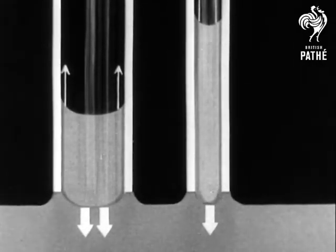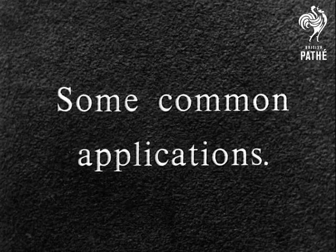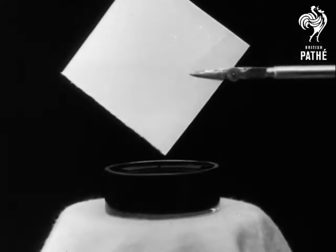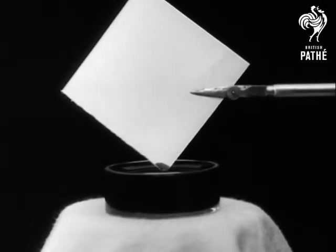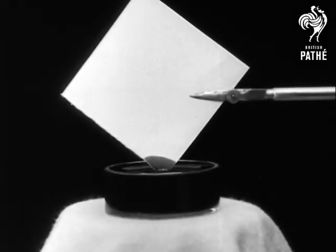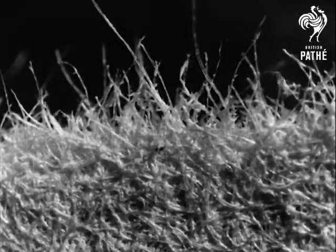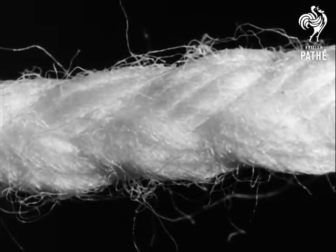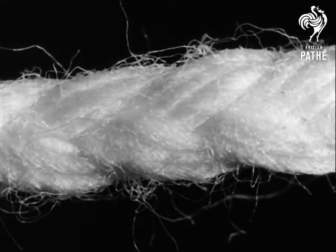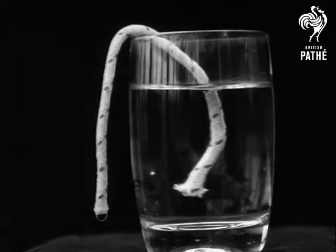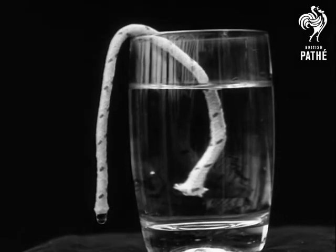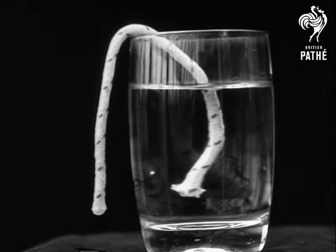We now turn to some common applications of surface tension. Blotting paper absorbs ink because between the fibers of which it's made, there exist narrow spaces into which surface tension draws the ink. These spaces can be seen clearly under the microscope. The same idea is used in lamp wick. Here, liquid is being drawn up through a wick until it drops from the other end. The process will continue until the liquid in the glass falls below the level of the end of the wick. The burning of a candle depends on the rising up the wick of the liquid paraffin wax.